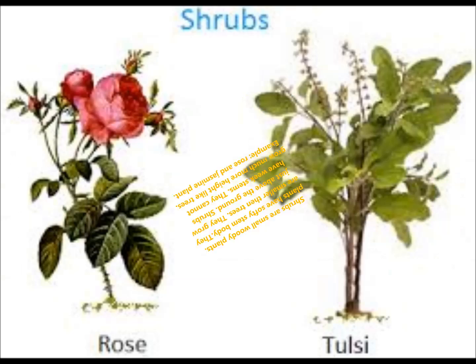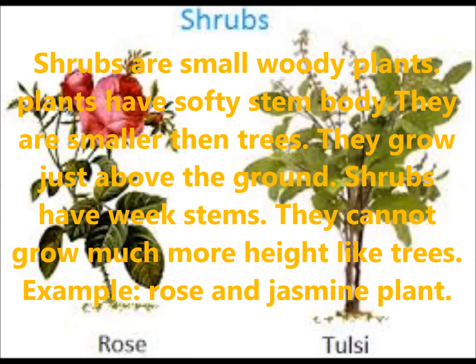Shrubs are small woody plants. These plants have a soft stem body. They are smaller than trees and grow just above the ground. Shrubs have weak stems and cannot grow to much height like trees. Examples of these plants are roses and jasmine.